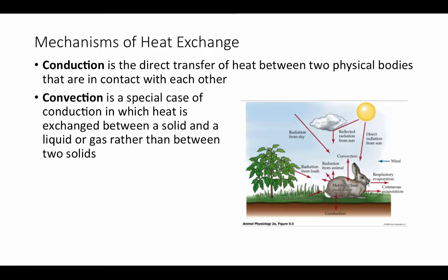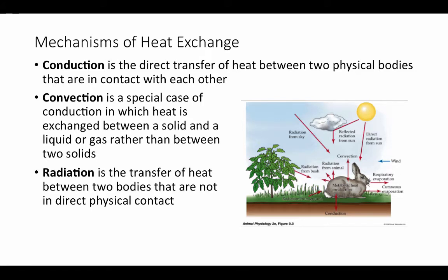The second method of heat exchange is convection — a special case of conduction in which heat is exchanged between a solid and a liquid or gas rather than between two solids. The key aspect of convection is that the liquid or gas is generally moving, providing bulk transport of thermal energy. Wind blowing across an animal will physically blow heat away from it, which is why wind chill makes you feel colder — those convection currents are physically moving heat away from your body.